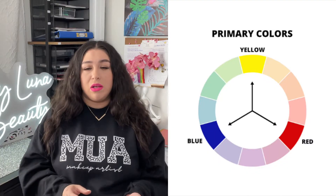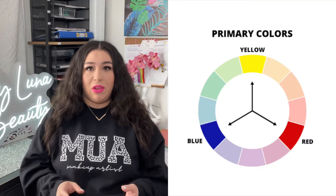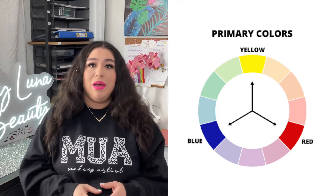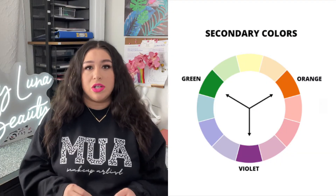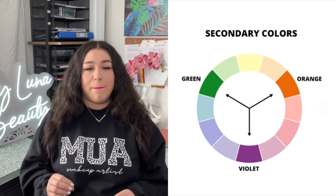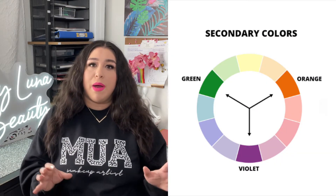The color wheel is mapped out with primary colors of red, yellow, and blue, evenly spaced around the wheel. Secondary colors such as orange, green, and purple are made by mixing two primary colors.